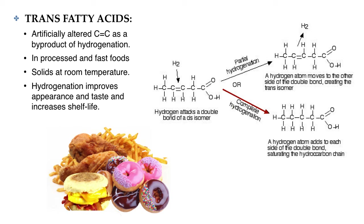Trans fats were actually not the intended product — they are the result of a side reaction with a catalyst of the hydrogenation process. Naturally occurring double bonds in fatty acids are found in what is called a cis configuration, meaning that both hydrogens are on the same side of the double bond. When cis fats don't get fully hydrogenated, some get turned into a trans isomer of the fat.